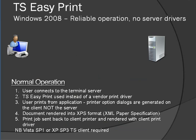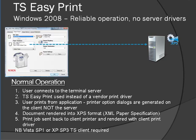Moving to presentation virtualization — obviously the next big one is Terminal Services. We had a lot missing in Server 2003; printing basically just did not work. What we now have in 2008 and 2008 R2 is TS Easy Print, which is a driverless printing solution. When a user connects to the terminal server and prints something, it creates an XPS document — the XML Paper Specification, effectively Microsoft's version of PDF.